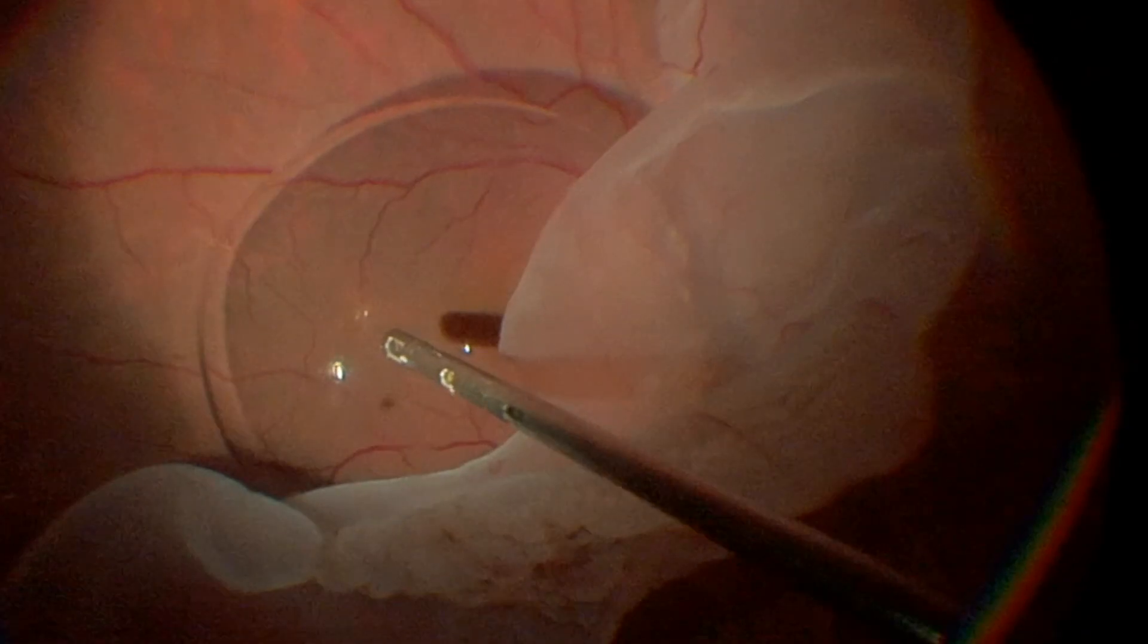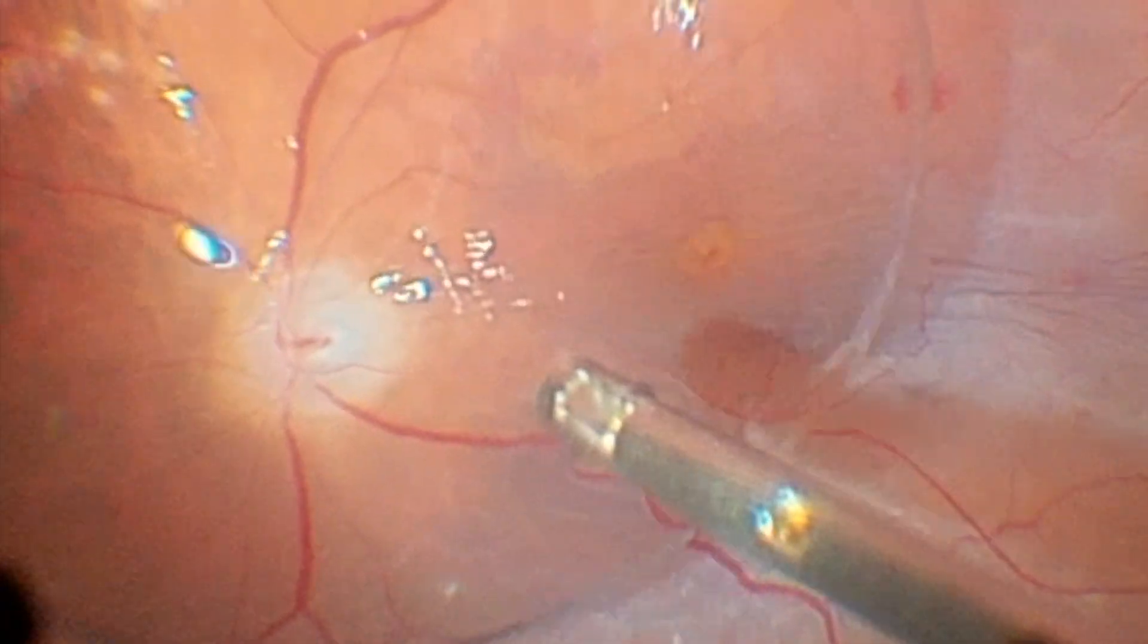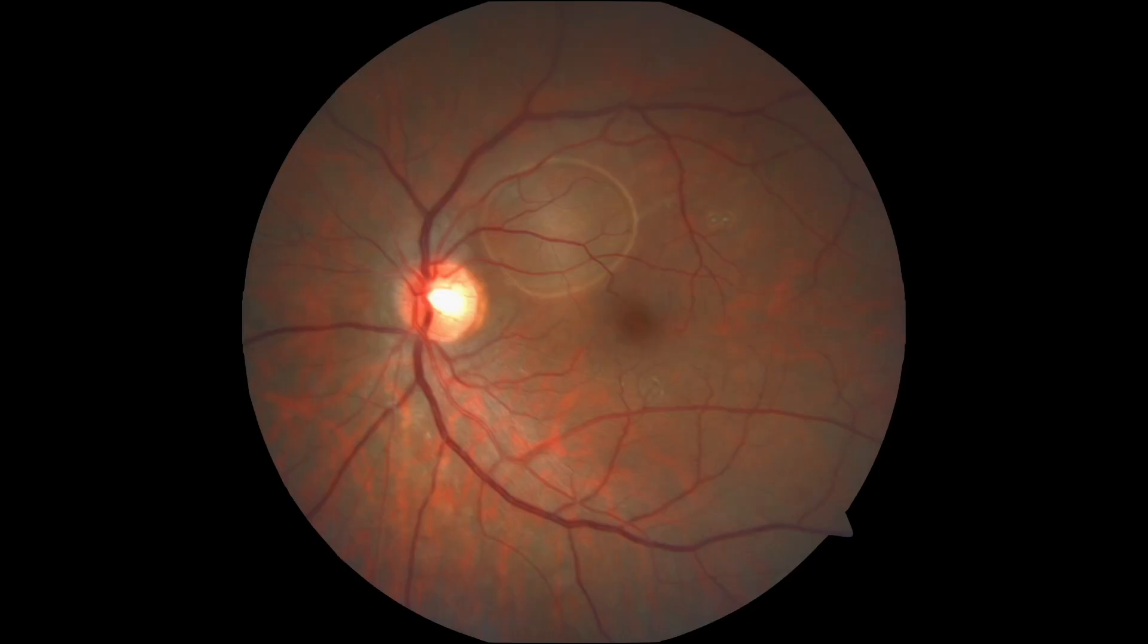It can be useful in managing regmatogenous retinal detachment, giant retinal tears, selected types of tractional retinal detachment, dislocated intraocular lenses, and dropped nucleus. Proper technique during perfluorocarbon injection can prevent complications associated with the migration of bubbles of the substance into the subretinal space.